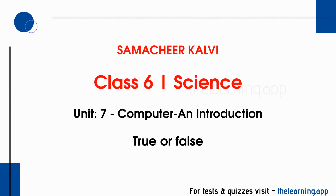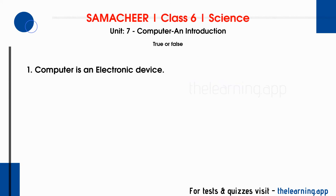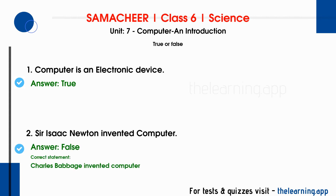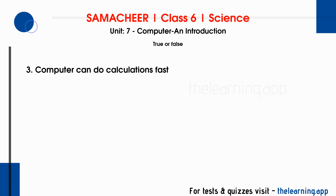Next, True or False. First question: Computer is an electronic device. This is True. Second question: Sir Isaac Newton invented the computer. This is False. Charles Babbage invented the computer — that is the correct statement. Third question: Computer can do calculations fast. This is True.